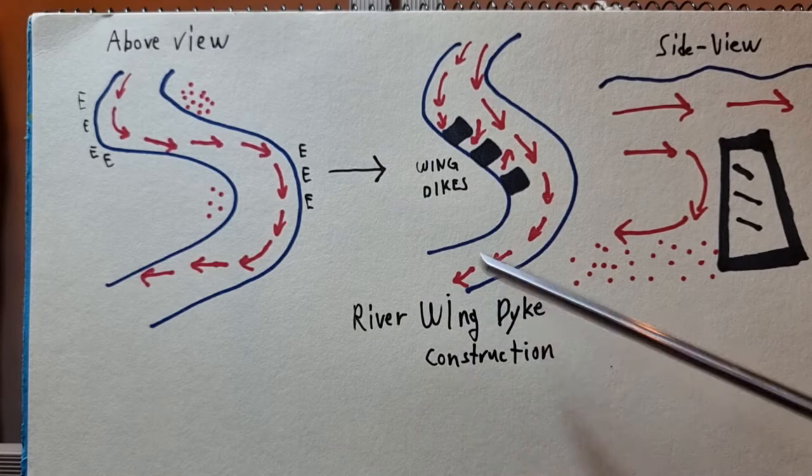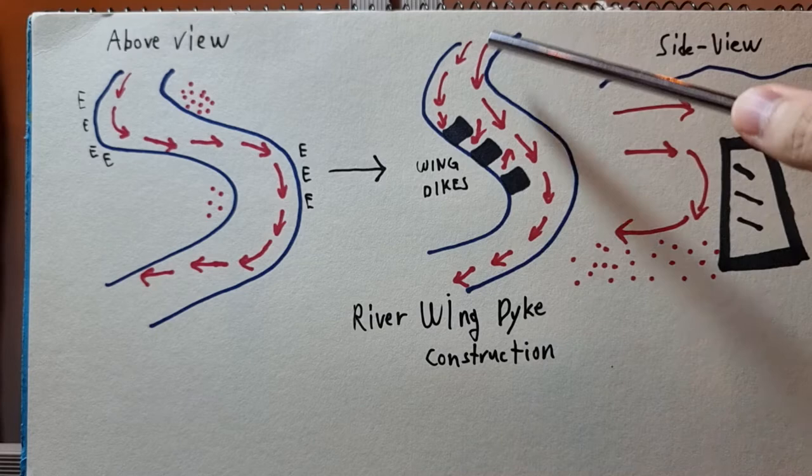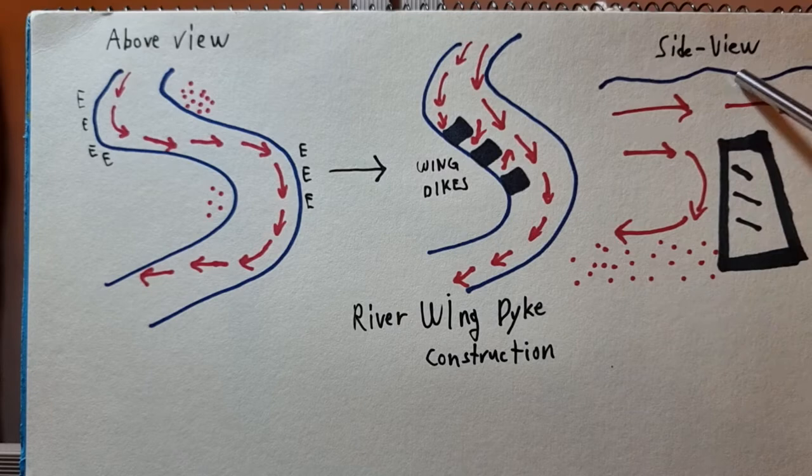So we build river-winged dikes, sometimes called river-winged dams, perpendicular to the flow of the river. By doing so, we have created a channel that is much larger, deeper, and faster compared to the areas where the winged dikes are.